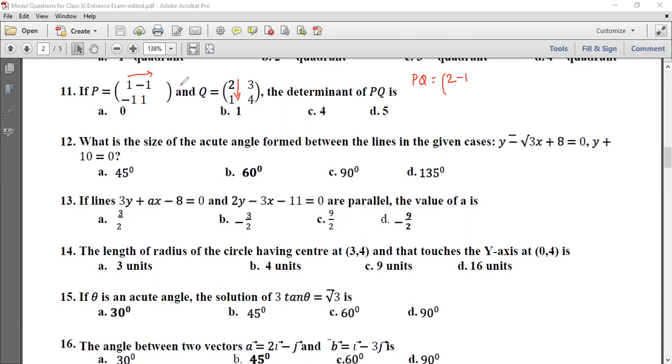Then row by column, 1 into 3, minus 1 into 4. 1 into 1, minus 1 into 2, minus 2, plus 1 into 1, which is 1. This is going to be row by column, minus 1 into 3, minus 3, plus 1 into 4, plus 4.